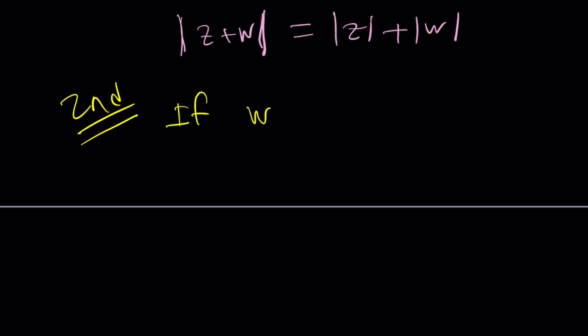So here's the thing. If W is KZ, where K is a positive real number, then the absolute value of Z plus W is going to equal the absolute value of Z plus the absolute value of W. I made a claim, so I kind of need to prove it.